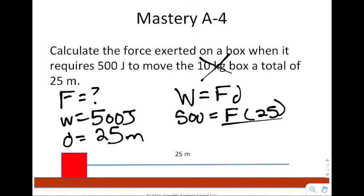We would say 500 equals F times 25. We would divide both sides by 25. When we divide both sides by 25, you'd end up getting an answer of 20 newtons of force.